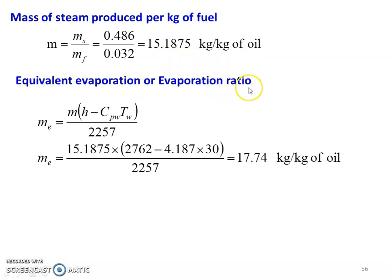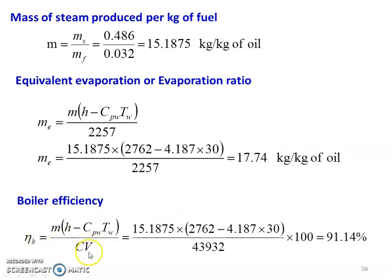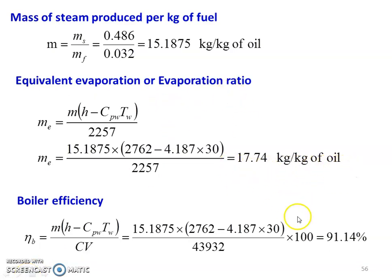Equivalent evaporation, ME equals M into (H minus Cpw into Tw) divided by 2257. So, 15.1875 multiplied by (2762 minus 4.187 into 30) divided by 2257 equals 17.74 kilograms per kilogram of oil. Then we calculate the boiler efficiency: eta B equals heat utilized to produce steam divided by the calorific value, which is M into (H minus Cpw into Tw) divided by the calorific value. So, 15.1875 into (2762 minus 4.187 into 30) divided by 43,932 into 100 equals 91.14%. The evaporation ratio is 17.74 kg per kg of oil and the boiler efficiency is 91.14%. These are the answers to the question.